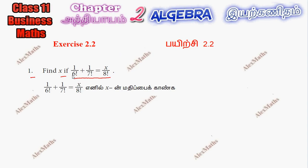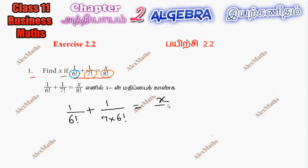The least term is the first one, that is 1 by 6 factorial. As 8 factorial is the largest, we will expand. So the first term is 1 by 6 factorial, plus 1 by 7 factorial which is 1 by 7 into 6 factorial, equals x by 8 factorial, which is x by 8 into 7 into 6 factorial.